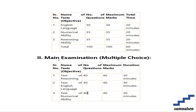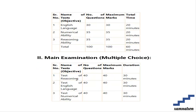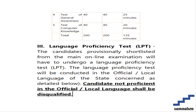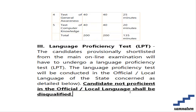Once you qualify the prelims, you will attend the main examination, also a multiple choice exam with five sections: Reasoning, English Language, Numerical Ability, General Awareness, and Computer Knowledge. There are 40 questions and 40 marks for most sections. General Awareness has 40 questions, 40 marks, and 25 minutes. The total is 200 questions, 200 marks, and 155 minutes.